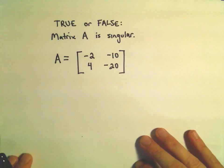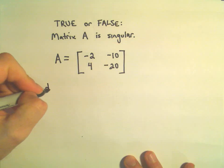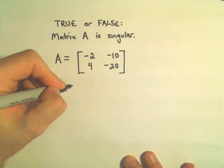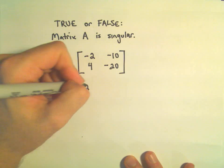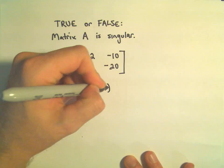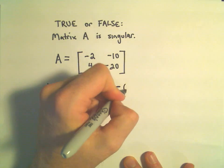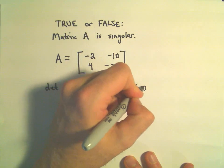Well, all we have to do is just simply calculate the determinant. So, the determinant of A here, we'll take negative 2 times negative 20. We subtract away the product of 4 times negative 10.